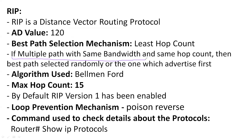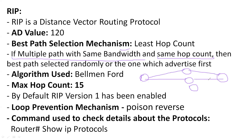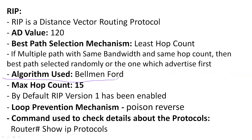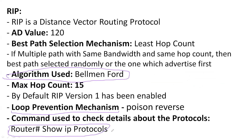If there are multiple paths with the same bandwidth and same hop count, which path will be selected? For example, if there is a source router and a destination router with multiple paths — say path 1, 2, and 3 — and all have equal hop counts and 100 Mbps bandwidth, RIP will randomly choose whichever network was defined first. The algorithm used is the Bellman-Ford algorithm, which works on least hop count. The command to check protocol status is 'show ip protocols'.